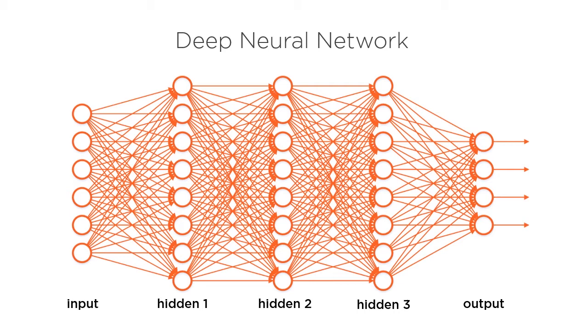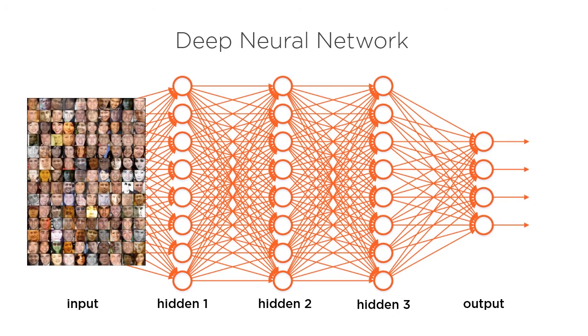For example, imagine we wanted to teach a deep neural network how to detect human faces. First, we'd feed a set of labeled images into the input layer of this network. We'd do this to teach the network the faces of each person and their corresponding name.